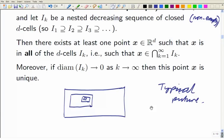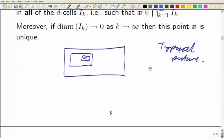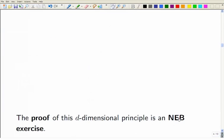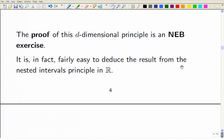So we won't prove that. I'll leave it to you as an exercise. Oh, I've already done a typical picture for d equals two, so I don't have to fill in that gap. As I say, you can actually deduce it from the one-dimensional one if you look at what it means to be in a d-cell.